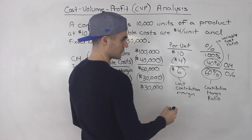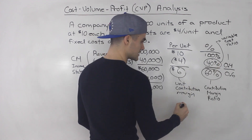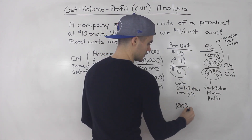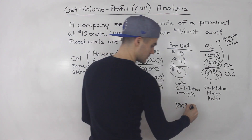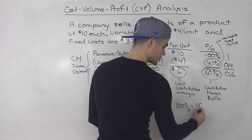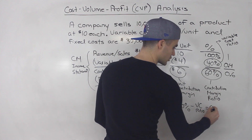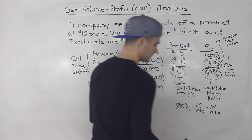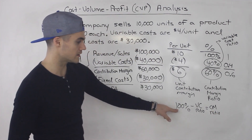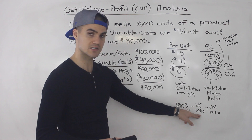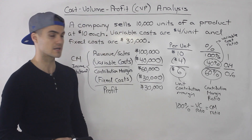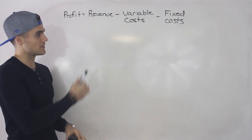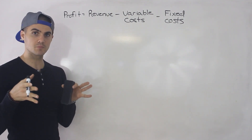If we convert everything to decimals: sales = 1, variable cost ratio = 0.4, contribution margin ratio = 0.6. Notice that 1 minus 0.4 equals 0.6. So 100% minus the variable cost ratio always gives us the contribution margin ratio. More generally: profit equals revenue minus variable cost minus fixed cost.